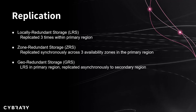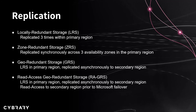Next we have geo-redundant storage, or GRS. This is pretty much having LRS in a primary region, and then that data is going to be replicated asynchronously to a secondary region also following the LRS format — so basically you're going to have LRS in your primary region and LRS in a secondary region. This second region is going to be hundreds of miles away from the primary one, and this will protect against a regional outage. However, data in the secondary region is not going to be available for read or write until Microsoft initiates the failover. If you need read access to that secondary region before Microsoft initiates the failover, this is where read access geo-redundant storage, or RA-GRS, comes into play. You still have LRS in the primary region and LRS in the secondary region, but you're going to have read access to the secondary region and its data prior to Microsoft initiating a failover.